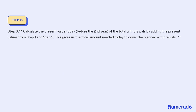Step 3: Calculate the present value today (before the second year) of the total withdrawals by adding the present values from Step 1 and Step 2. This gives us the total amount needed today to cover the planned withdrawals.